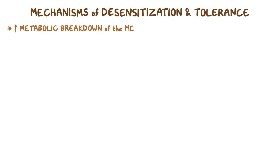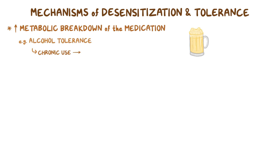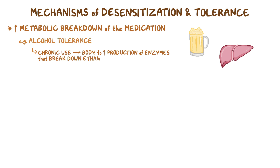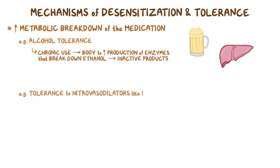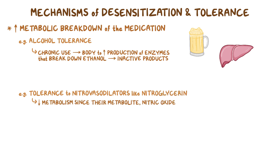Another mechanism is the increased metabolic breakdown of the medication. An example is alcohol tolerance, where chronic use causes the body to increase production of enzymes that break down ethanol into inactive products. On the flip side, tolerance to nitrovasodilators like nitroglycerin is a consequence of their decreased metabolism, since their metabolite, nitric oxide, is the substance that causes the vasodilation.